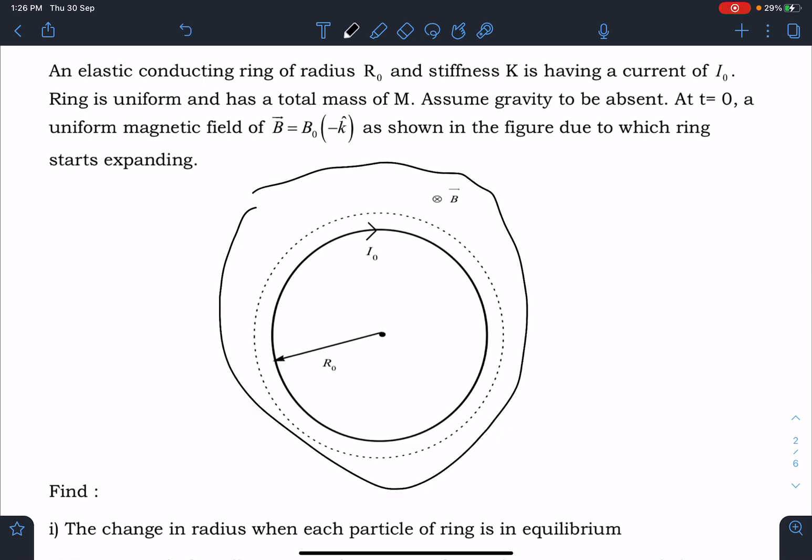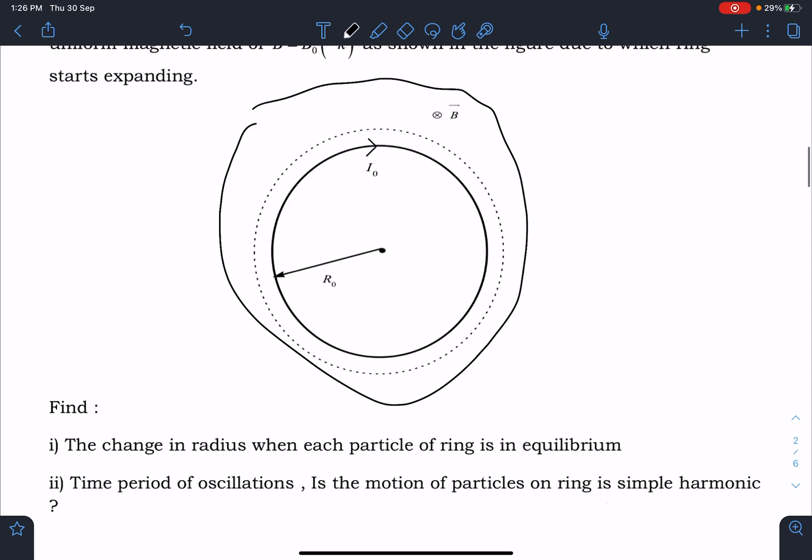So here this is the situation, field is into the plane. Number one, we have to find the change in the radius when each particle of ring is in equilibrium. And number two is time period of oscillation. Second part is the motion of particle on the ring is simple harmonic, so we have to comment on this part.